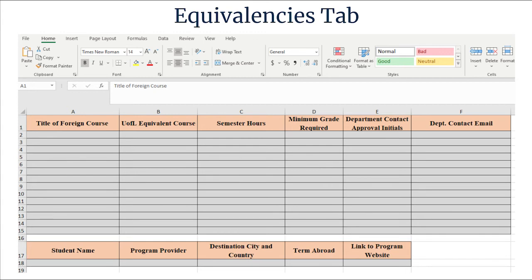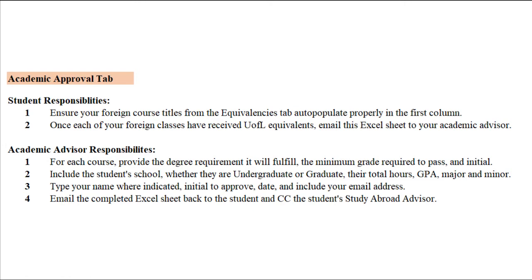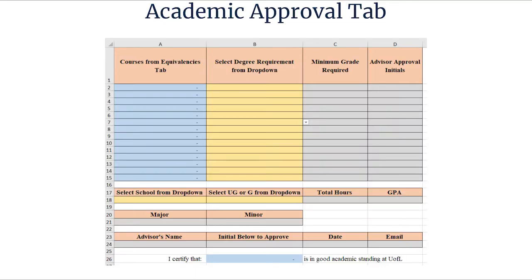Once each study abroad course receives a UofL equivalent course, the student should email the spreadsheet to their academic advisor. The Academic Approval tab is completed by the academic advisor. The sections in blue will again auto-populate and should not be altered. The advisor is responsible for filling in the remainder of the sheet, then emailing the completed Excel sheet to the student. The student will then email the sheet to their study abroad advisor.